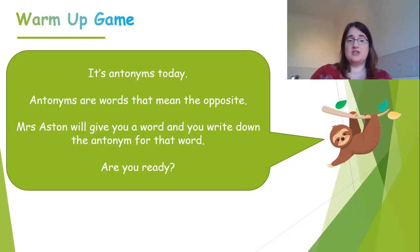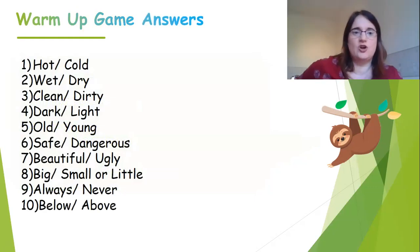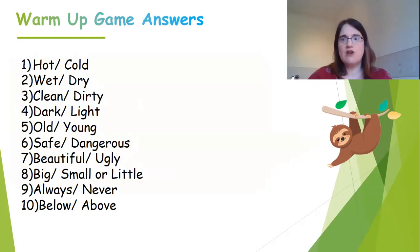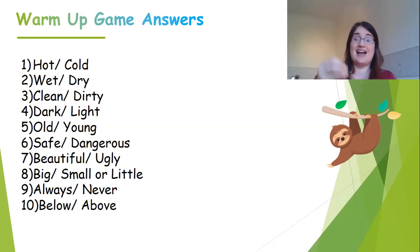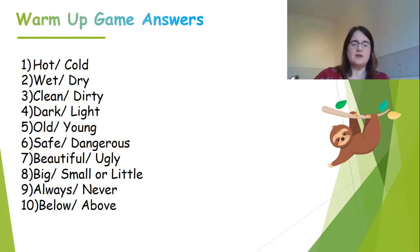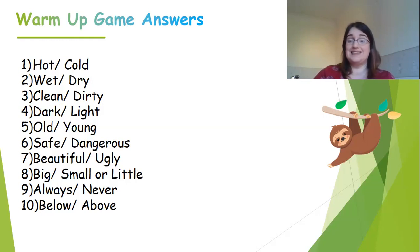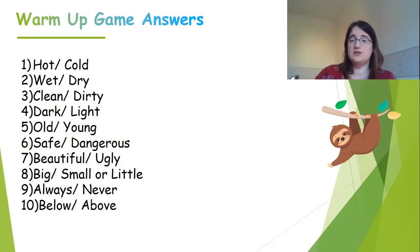If you missed any, rewind the video and check them. Let's have a look at the answers. We had 'hot' — the antonym is 'cold'; 'wet' — opposite is 'dry'; 'clean' — 'dirty'; 'dark' — 'light'; 'old' — 'young'; 'safe' — 'dangerous'; 'beautiful' — 'ugly'; 'big' — 'small' (or you could have a synonym like 'little'). You might not have exactly the same word as me — for example 'hot' and 'freezing' would be okay. And then 'always' and 'never', and 'below' and 'above'. These are called antonyms — opposites. In the last two lessons we were doing synonyms, which meant the same; this time we're doing antonyms. We're using these today because there are some opposites explored in the poetry we're going to look at.